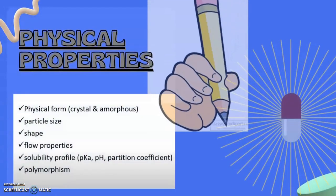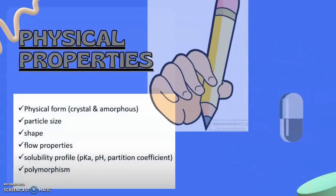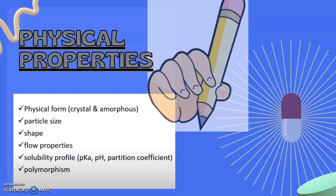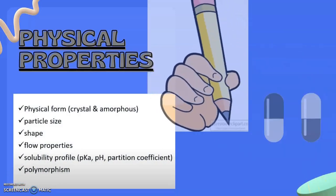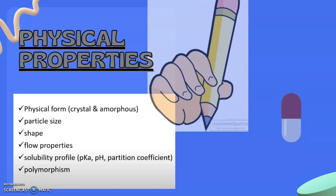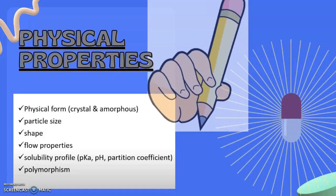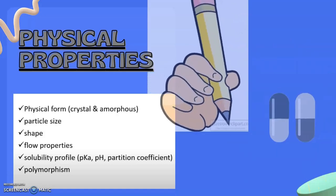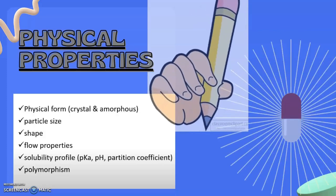The physical properties included in pre-formulation are physical form (crystal and amorphous), particle size, particle shape, flow properties, solubility profile which includes pKa, pH and partition coefficient, and the last physical property is polymorphism.